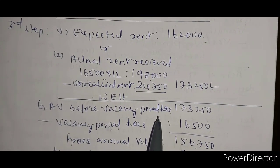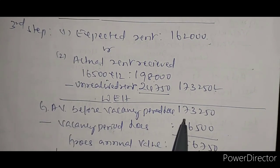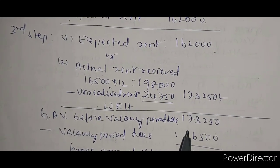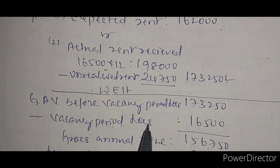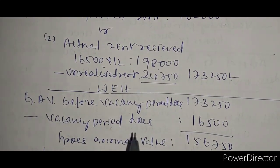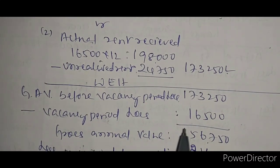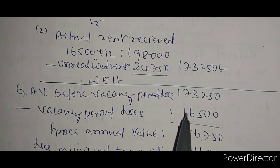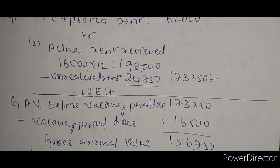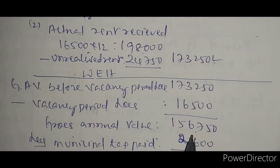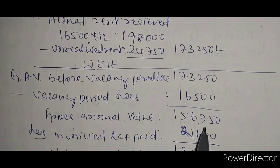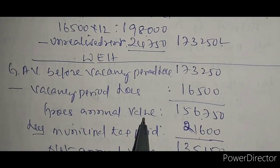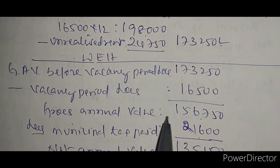From the gross annual value before vacancy period loss, we deduct the vacancy period loss. Vacancy period loss is sixteen thousand five hundred, giving one lakh fifty six thousand seven fifty. This is called the actual gross annual value.